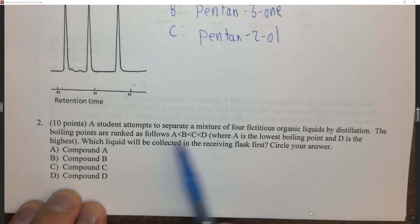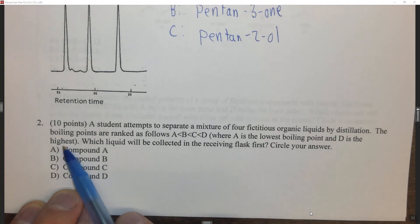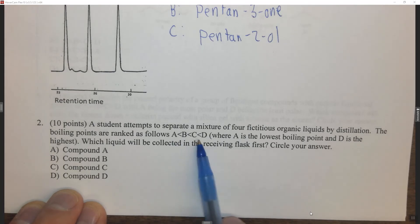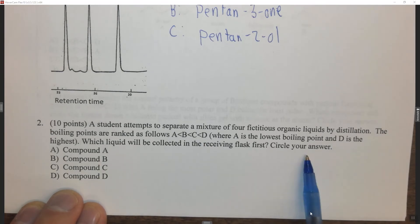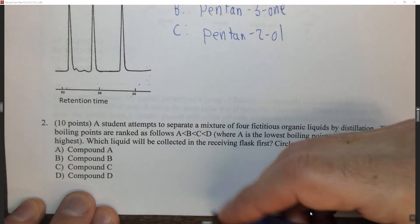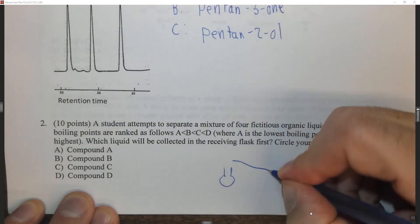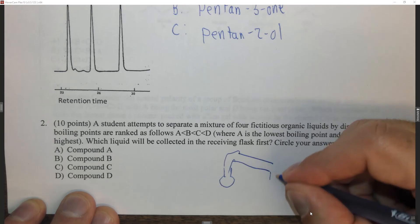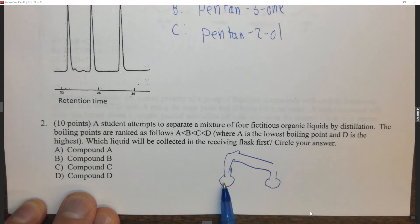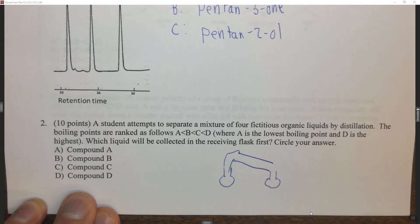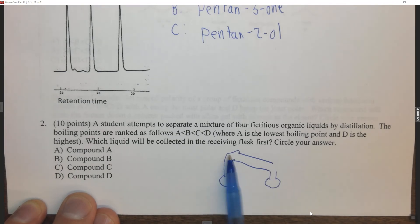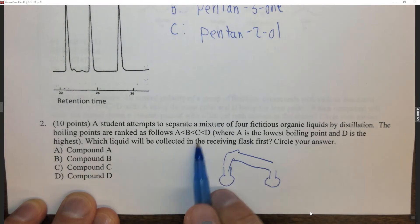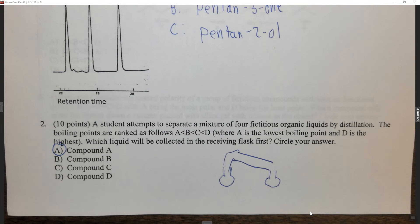Question two: a student attempts to separate a mixture of four fictitious organic liquids by distillation. The boiling points are ranked A < B < C < D, so A is the lowest boiling point and D is the highest. Which liquid will be collected in the receiving flask first? In a distillation we have a boiling flask connected to a condenser, and then a receiving flask. We boil the solution, it condenses, and by gravity it falls into the receiving flask. The lowest boiling point compound boils off first, condenses first, and falls into the receiving flask first — so compound A will distill first.